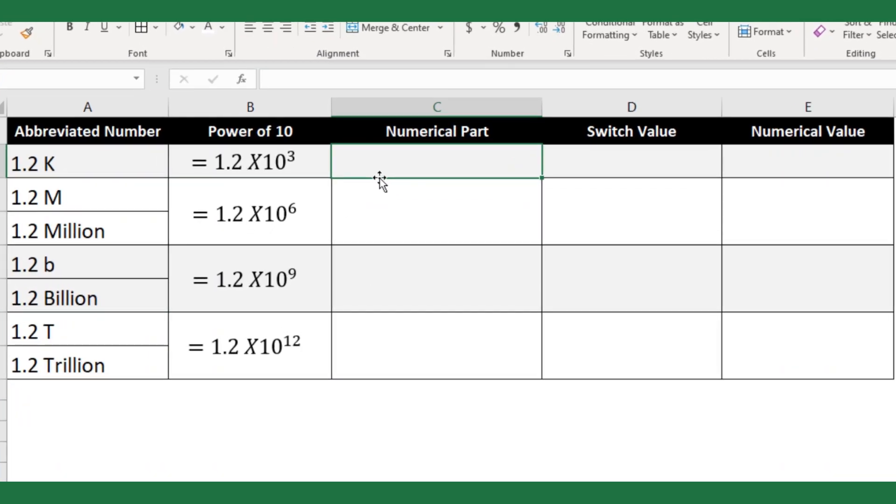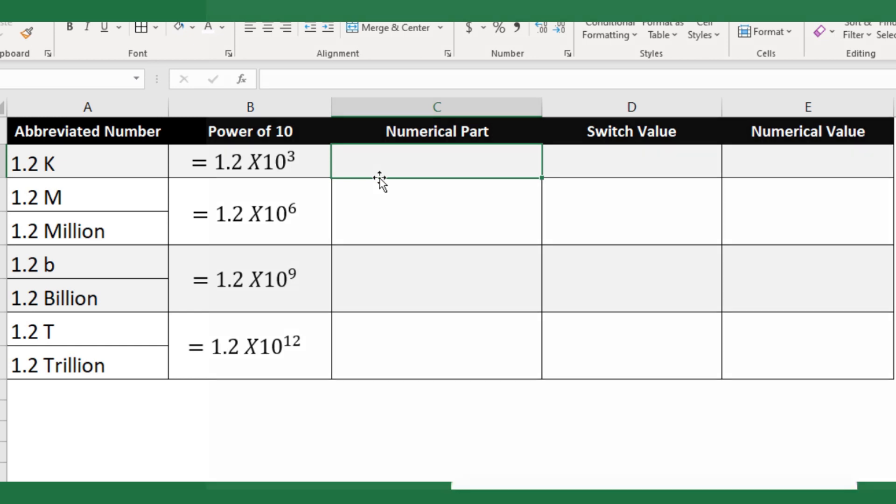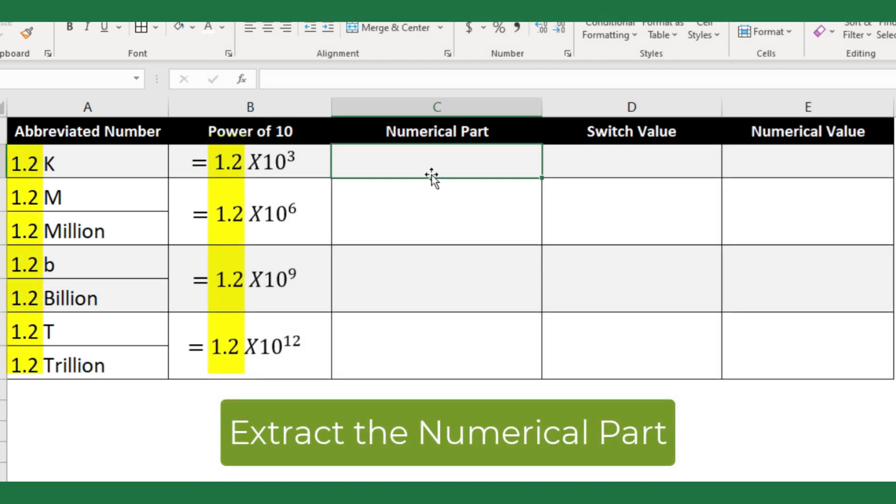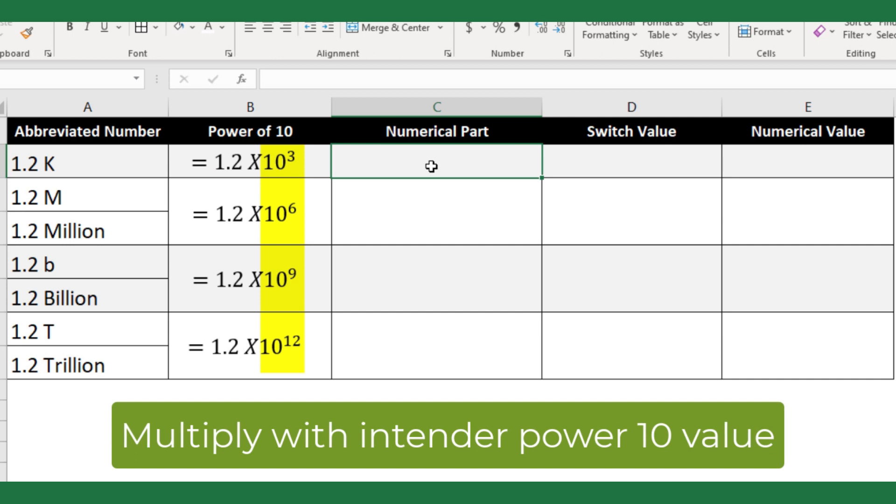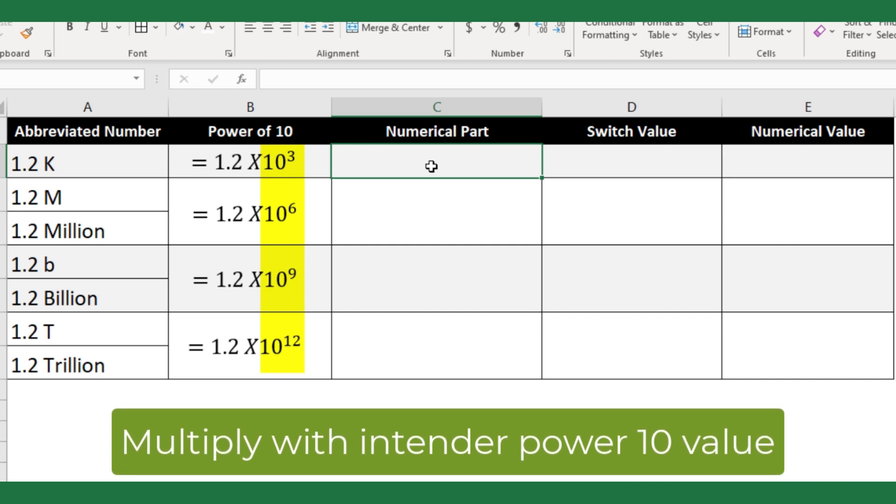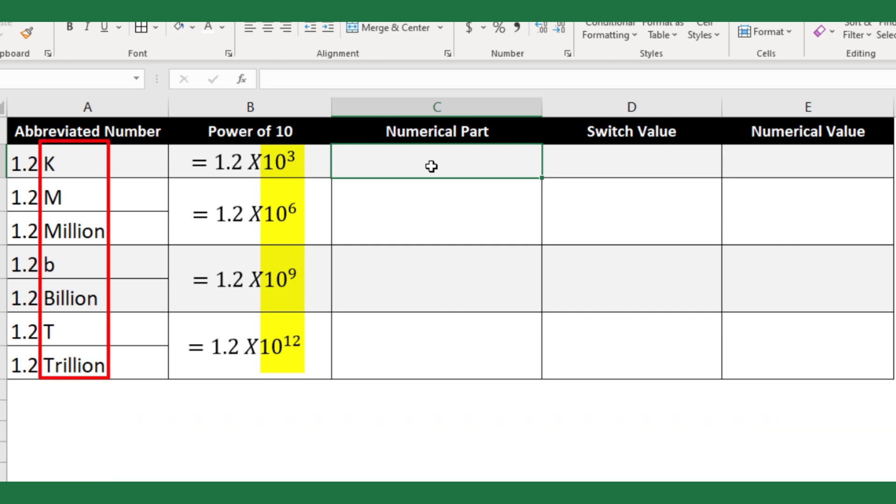Now let us see how we can apply a formula in Excel to convert to a real number. Basically, it can be done in two steps. First, we need to extract the numerical part. Then we shall multiply this number part with powers of ten based on the given suffix character.